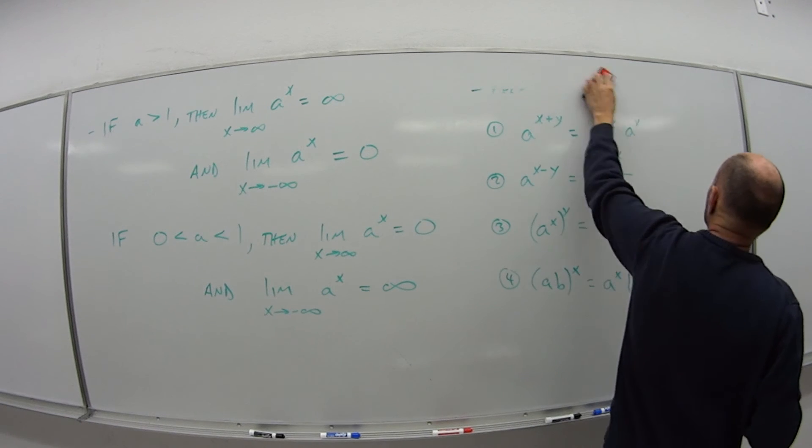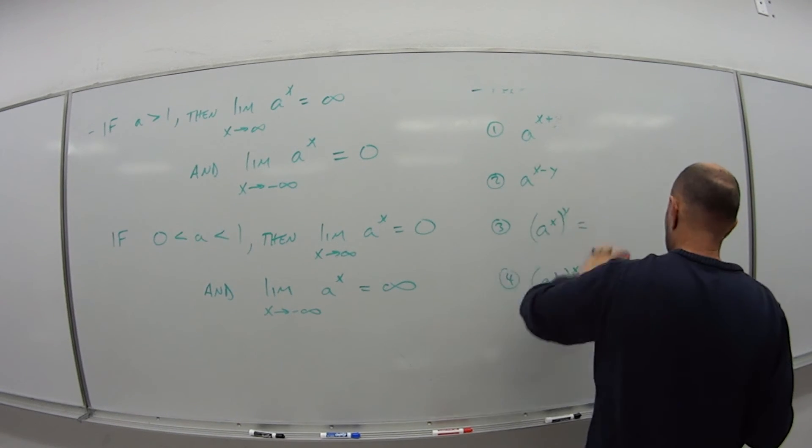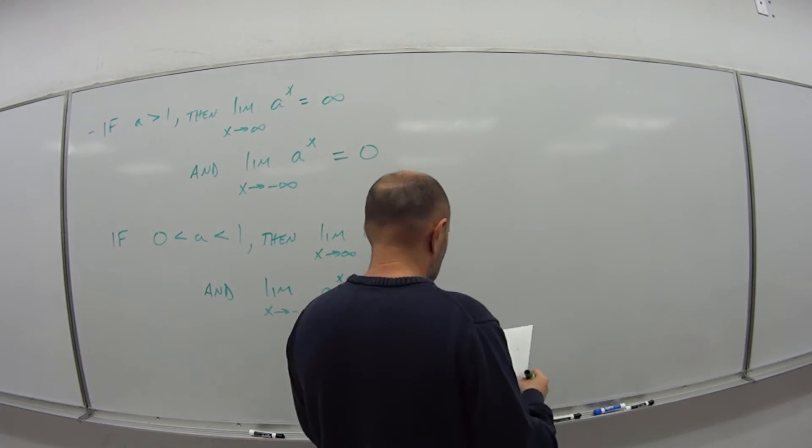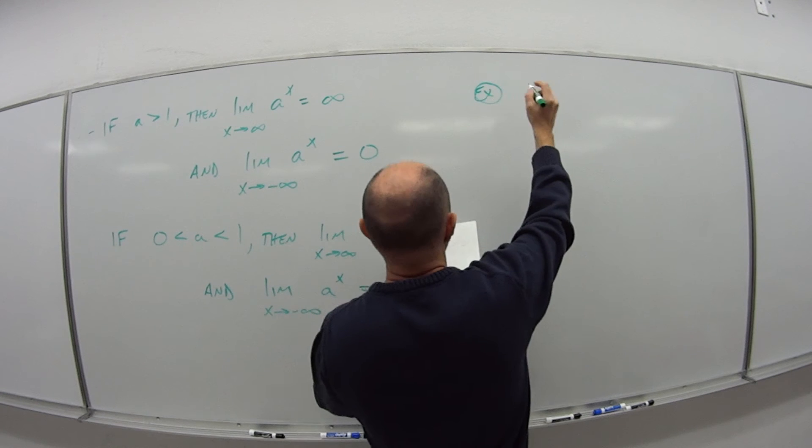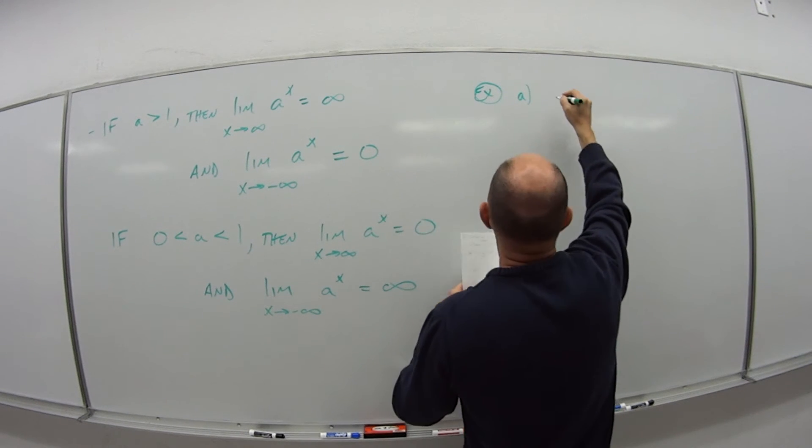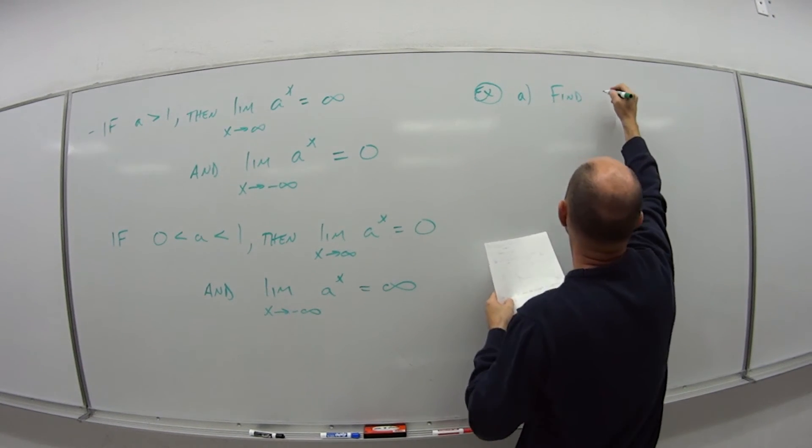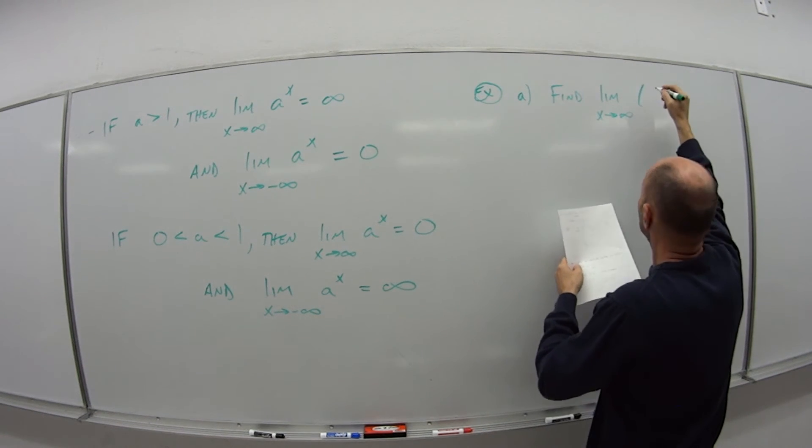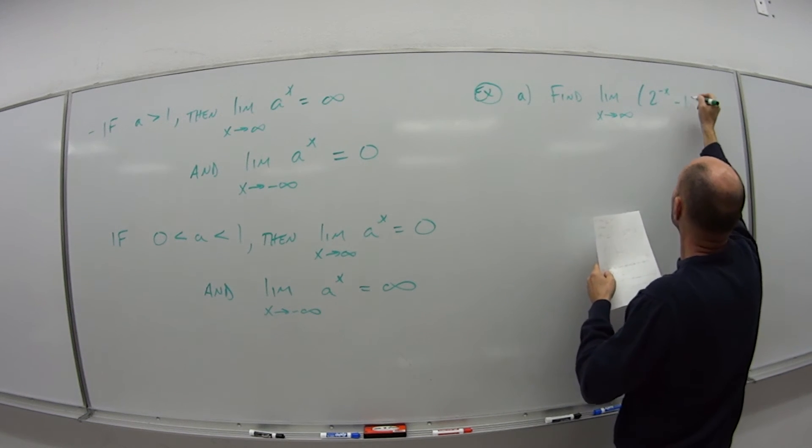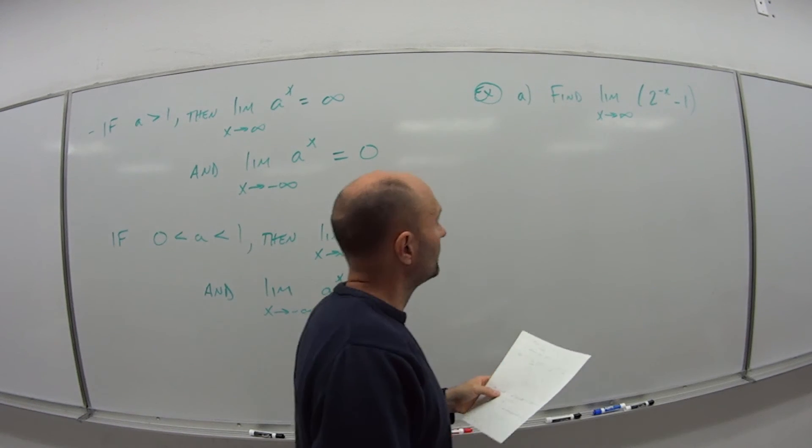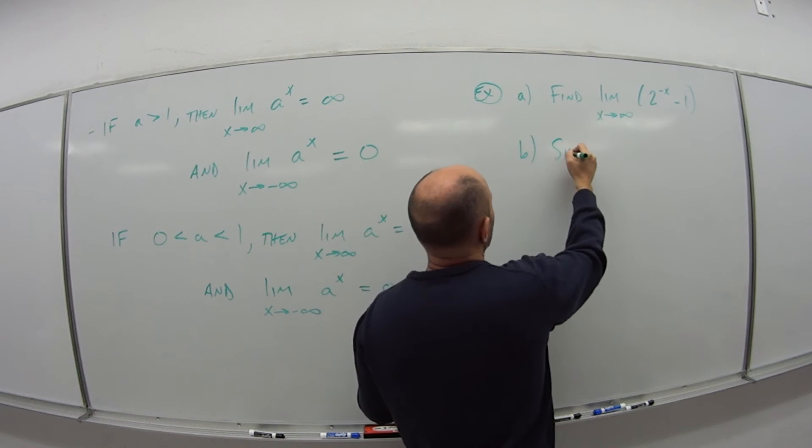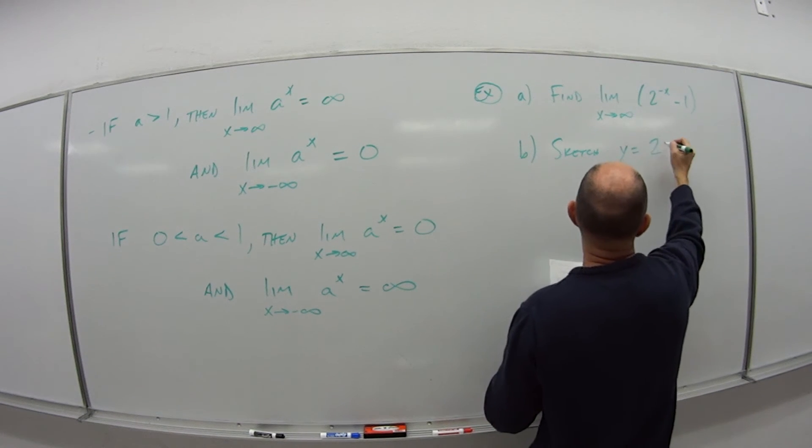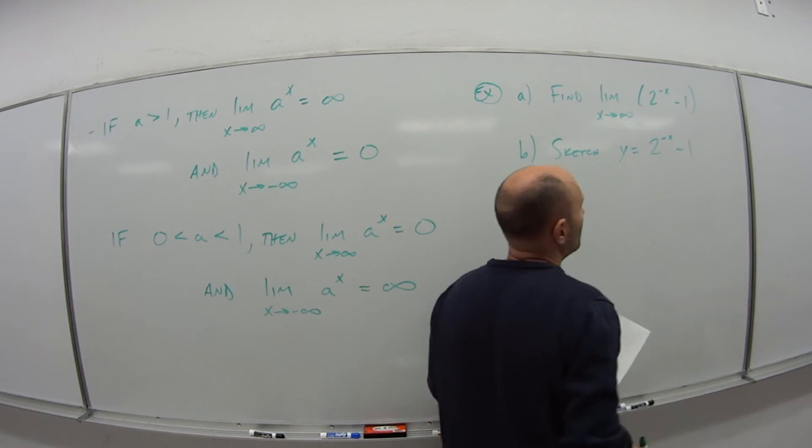So let's use that idea and look at an example. So 2 parts here. The first part, we want to find the limit as x goes to infinity of 2 to the minus x minus 1. And part b is I want to sketch what does this guy look like? Y equals 2 to the minus x minus 1.